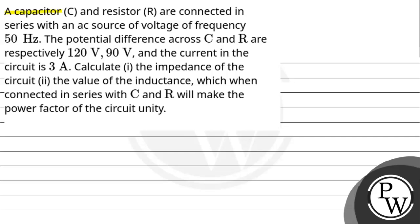Hello. Let us read this question. A capacitor C and a resistor R are connected in series with an AC source of voltage of frequency 50 Hz. The potential difference across C and R are respectively 120 volt and 90 volt, and the current in the circuit is 3 ampere. Calculate the impedance of the circuit and the value of inductance which, when connected in series with C and R, makes the power factor of the circuit unity.